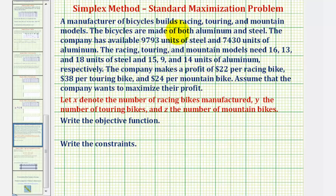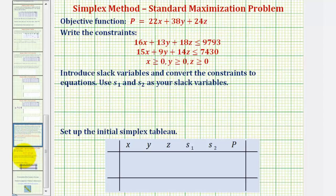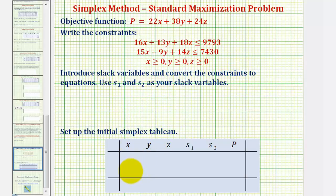In this example, we're given a standard maximization problem, asked to write the objective function and the constraints. Once we do this, we'll introduce slack variables to convert the constraints to equations, and then we'll set up the initial simplex tableau. We won't be solving this, we'll just be setting it up.